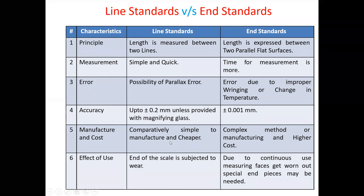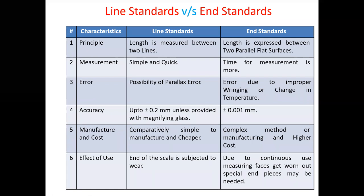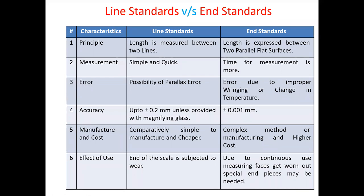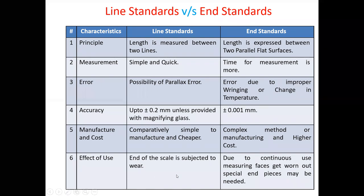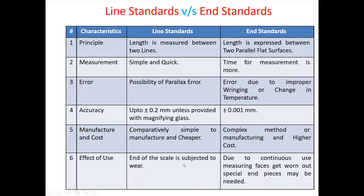For manufacturing cost: line standard instruments like a steel rule are easy to manufacture and cost is low. End standard instruments like micrometers, vernier calipers, or slip gauges are complex to manufacture and cost is high. For effect of use: with continuous use of the steel rule, the ends are subjected to wear and the marking lines become less visible. In case of end standard, due to continuous use, measuring faces get worn out; therefore special hardened end pieces may be needed.